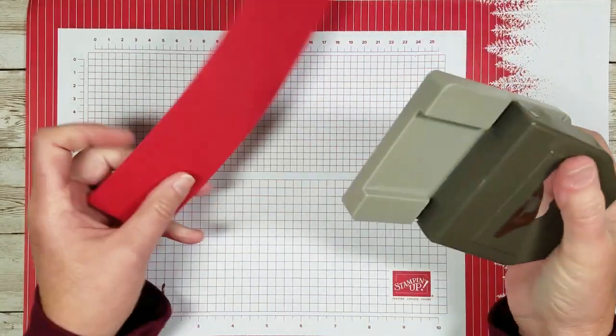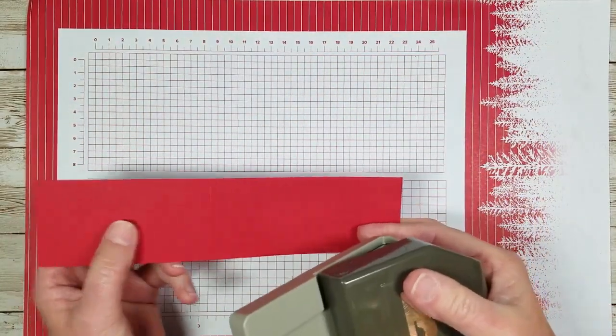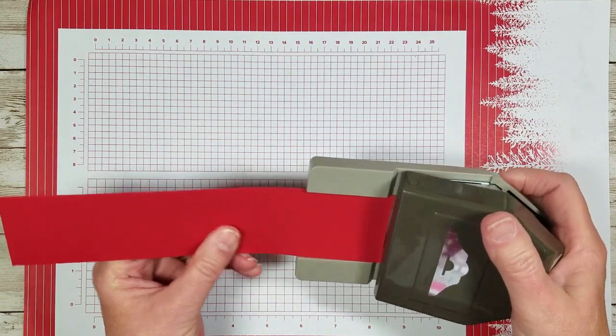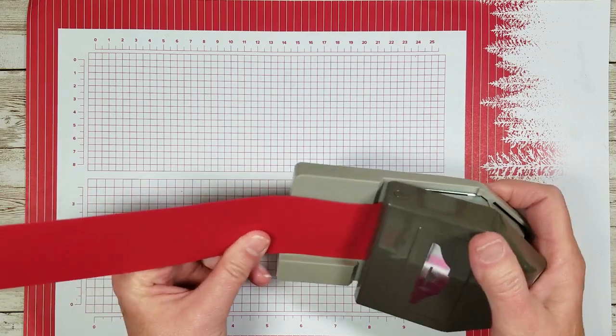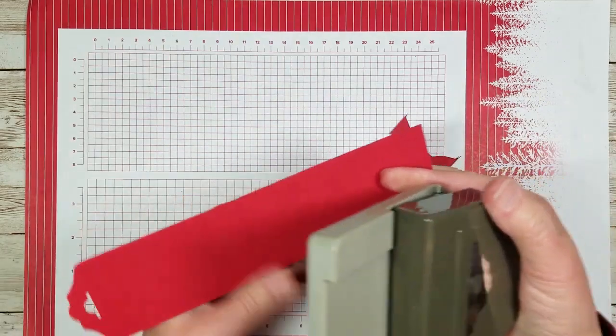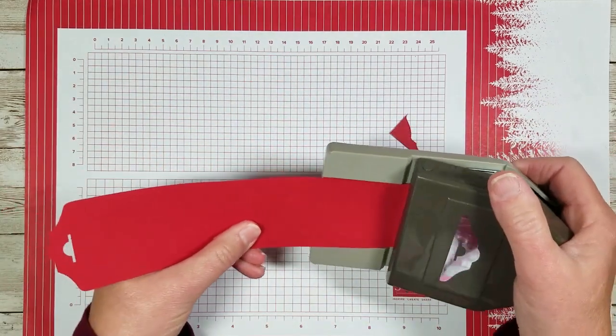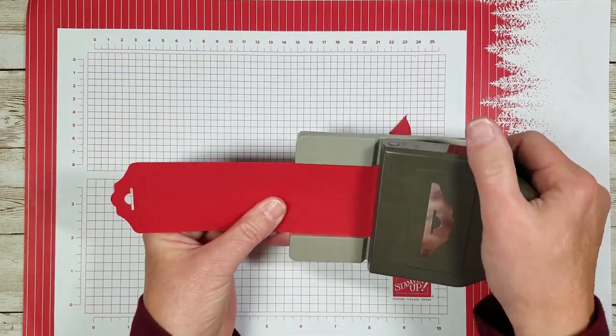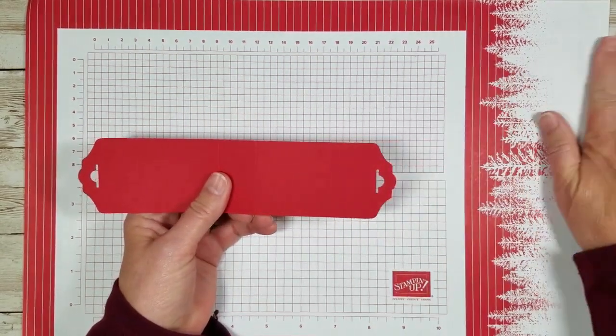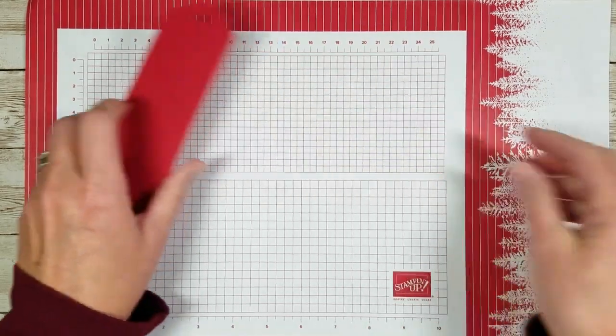Then you're going to punch the ends and I'm using the fancy tag topper punch, but you could use something else. Anything to punch the top. Cut to the side.